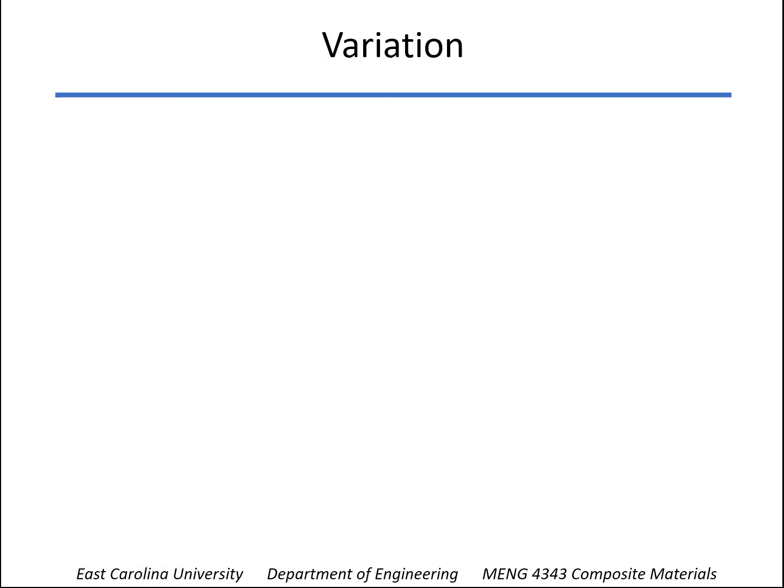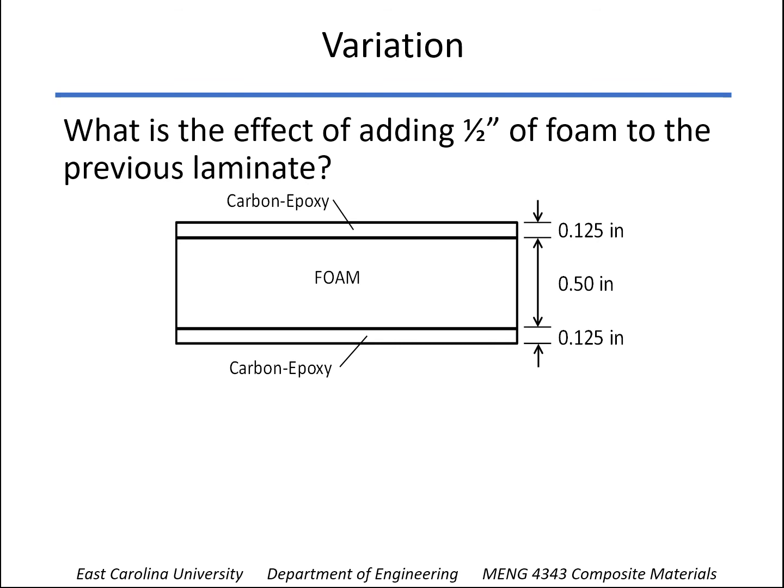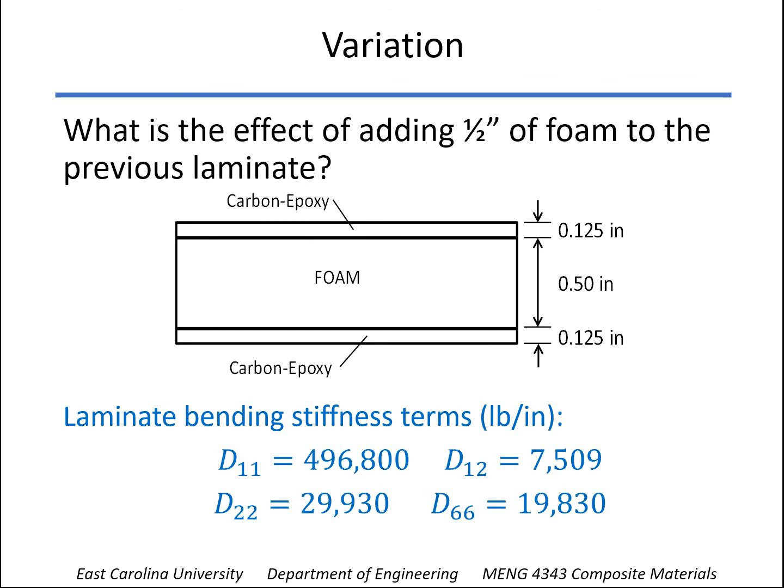Now, let's look at one variation. We've talked about this before with bending - adding a core is very efficient for bending. And for this buckling problem, the bending terms are what's important here. So adding a half inch of foam and still keeping our carbon epoxy at a quarter inch, but now distributed an eighth of an inch top and bottom above this half inch of foam.